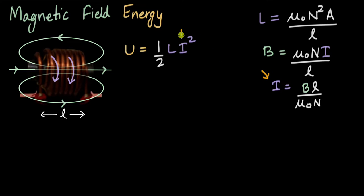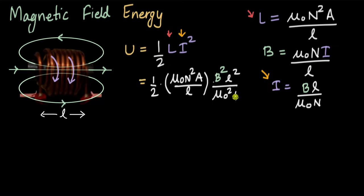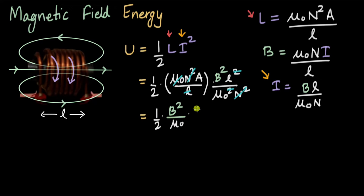Let's substitute this expression for I and also substitute the self-inductance L = μ₀n²A/L into the energy formula. The energy becomes half times (μ₀n²A/L) times I squared. Squaring the expression for I gives B²L² / (μ₀²n²). The n² terms cancel and one power of μ₀ and one power of L also cancel.